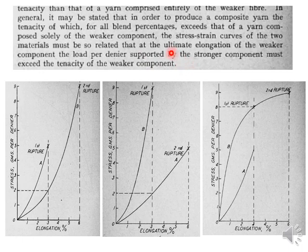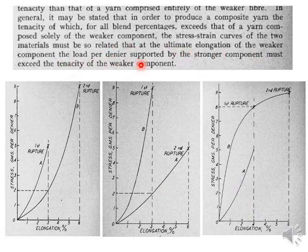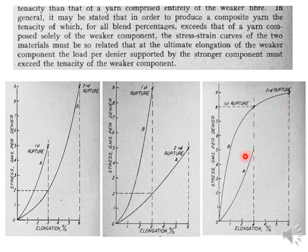What does this mean? At the ultimate elongation of the weaker component — which is 3% in this case — the tenacity supported at that ultimate elongation of the weaker component: the load per denier supported by the stronger component must exceed the tenacity of the weaker component. In the best case scenario, the tenacity is higher than 5, as we have seen in the previous slide.